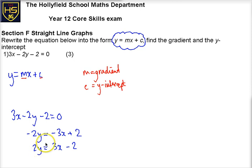However, we want it in the form y equals, so it's going to be y equals 3 over 2x minus 1, dividing everything by 2.